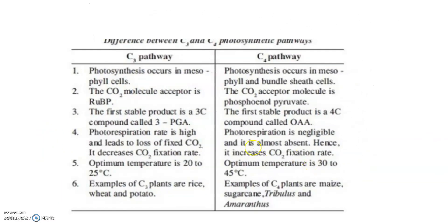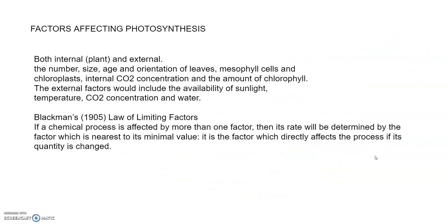Comparing C3 and C4 pathways: C3 pathway occurs in the mesophyll cells, while C4 pathway occurs in both mesophyll and bundle sheath cells. The carbon dioxide acceptor in C3 is ribulose bisphosphate, and in C4 it is phosphoenol pyruvate. The first stable product in C3 is 3-phosphoglyceric acid, and in C4 it is the four-carbon compound oxaloacetic acid. Photorespiration rate is higher in C3, decreasing carbon dioxide fixation, whereas in C4 it is negligible or almost absent, increasing carbon dioxide fixation rate. Optimum temperature for C3 is 20–25°C and for C4 is 30–45°C. Examples of C3 plants are rice, wheat, and potato; C4 plants include sugarcane, amaranthus, and maize.